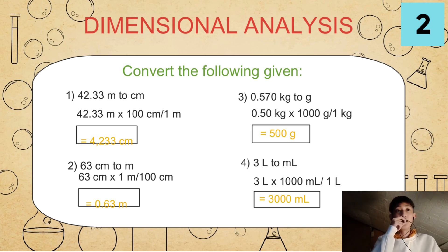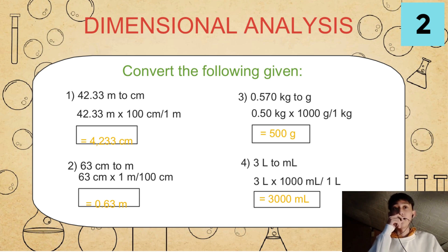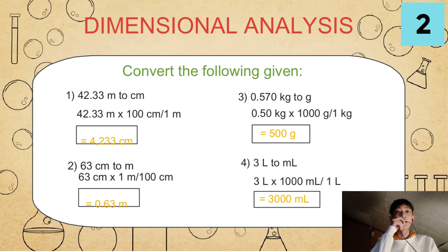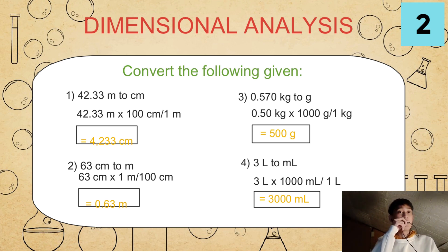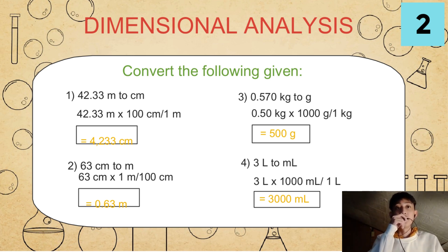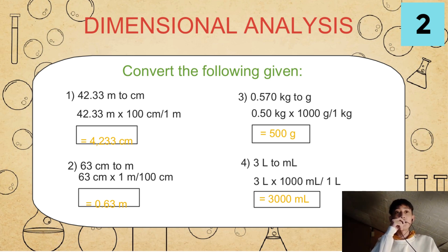In number 3, in order to convert 0.570 kilograms to grams, we will use 0.570 kilograms times 1,000 grams per 1 kilogram, which equals 500 grams. So in order to convert 3 liters to milliliters, we will use 3 liters times 1,000 milliliters over 1 liter, and it will be equal to 3,000 milliliters.